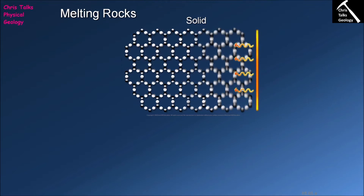The next thing we need to think about when considering igneous rocks is how do we actually make the magma. In order to make a magma we obviously need to take a solid rock and melt it to make liquid rock, which we call magma.